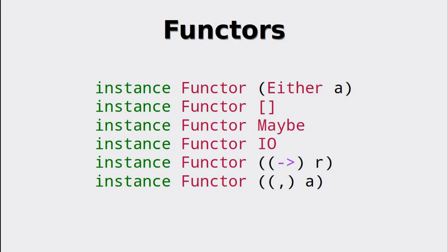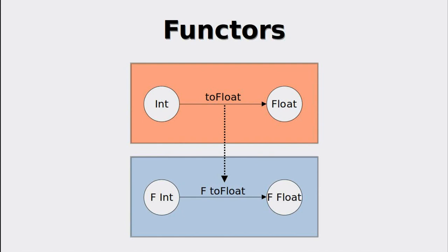Let's look at some examples, specifically the instances for Maybe and List. Suppose we have a function called toFloat that converts ints to floats. Functors are capable of putting this function into their context — we formally denote the context of a functor as a capital F. For Maybes, a Maybe Int can be converted into a Maybe Float by the application of fmap toFloat, which is the morphism in the functorial context. Here we see this application in context.